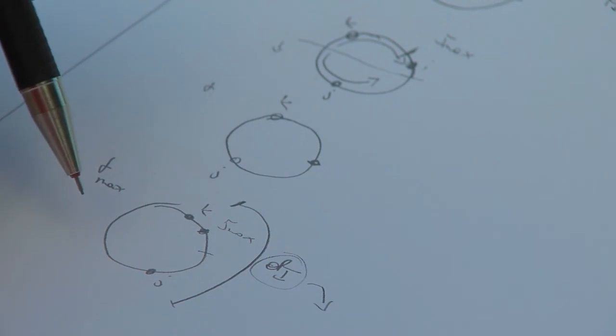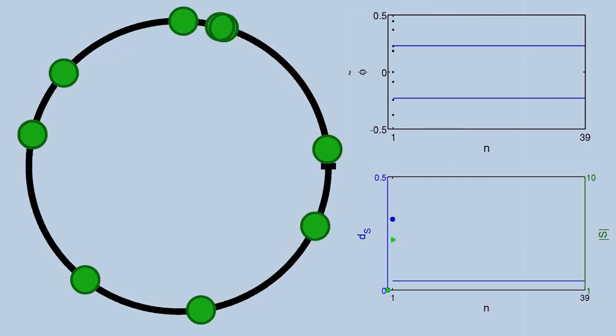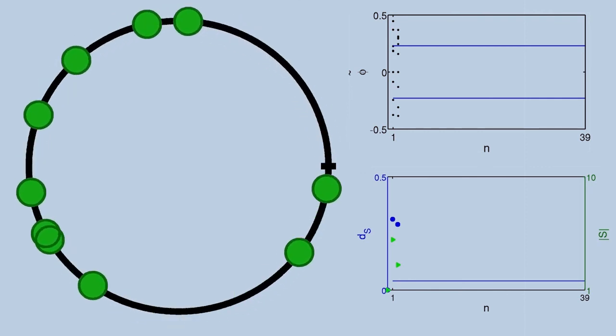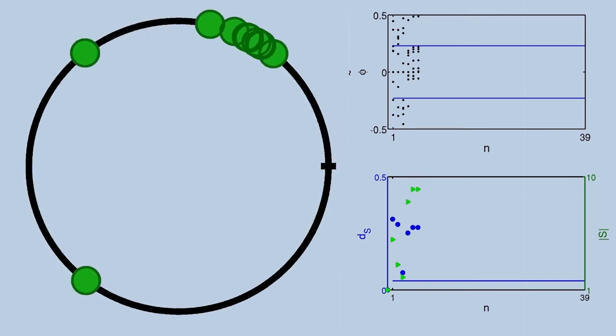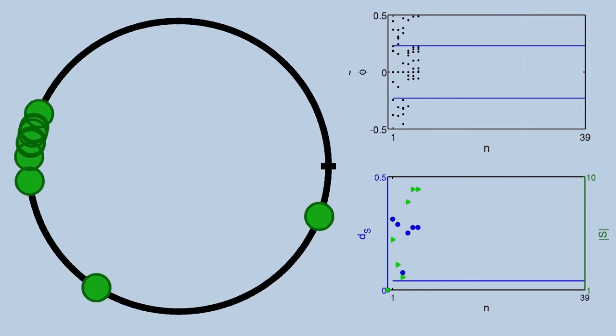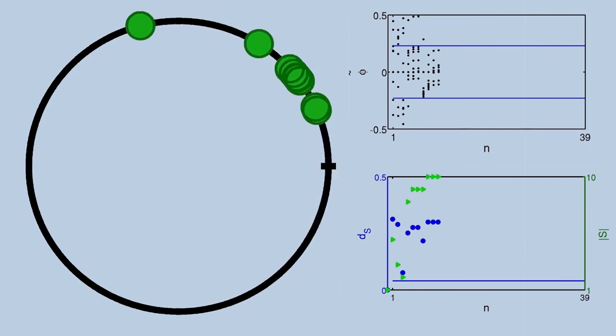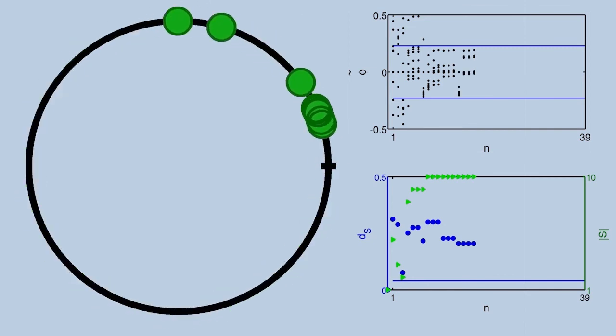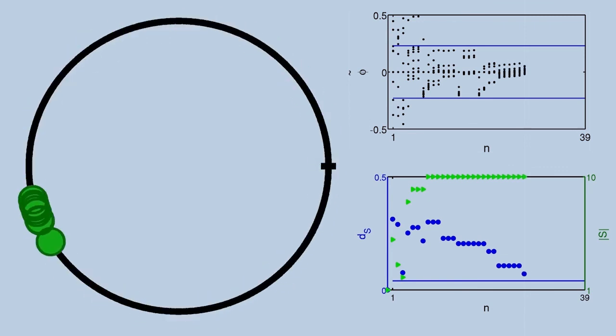How this applies to a bigger set of oscillators will now be shown in a video. On the left, we see a realization with 10 oscillators on a random network. A fire of an oscillator is indicated by a red light. On the top right, we show the oscillators' phases at the fire times. Note that the y-axis is centered around zero. All oscillators between the blue lines are combined in a set S. On the bottom right, we see the diameter of S and the size of S. As soon as all oscillators are in S, then D_S equals D_I and is monotonically decreasing, and synchronization is achieved.